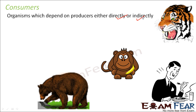For example, let us take a cow. A cow feeds on plants directly. So that means a cow is a consumer who is directly dependent on a producer, that is, a green plant. Now let us take an example of a lion, which feeds on a cow. In that case, the lion is also dependent on plants, but it is indirectly dependent on plants, because it is not directly eating a plant — it is eating an animal which eats plants.